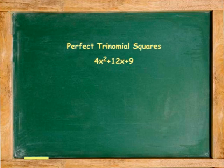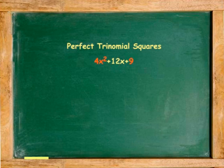Another example: 4x² + 12x + 9 is a perfect trinomial square because the last term is positive and the first and last terms are perfect squares. 2x times 2x is 4x² and 3 times 3 is 9.